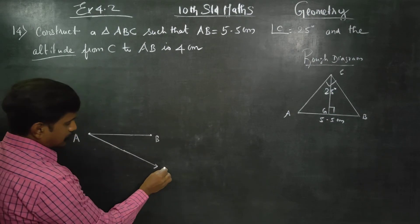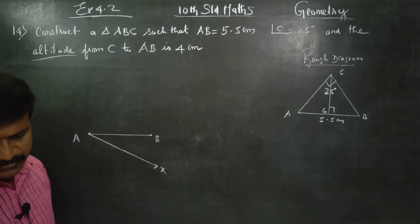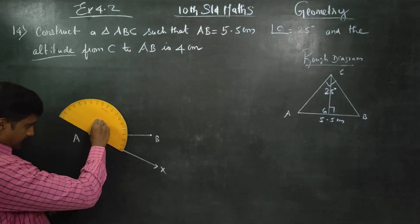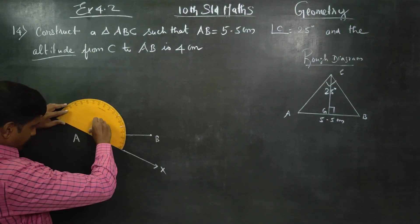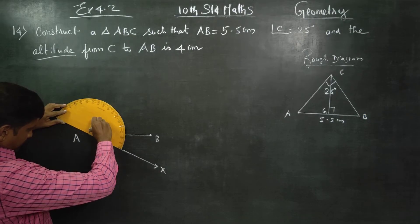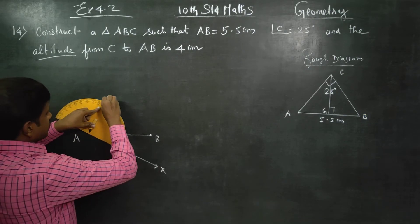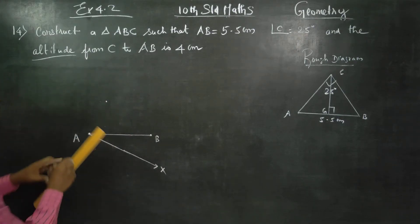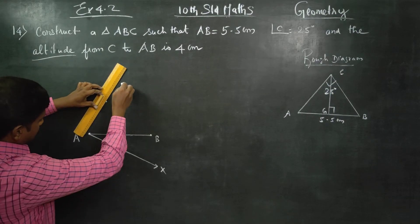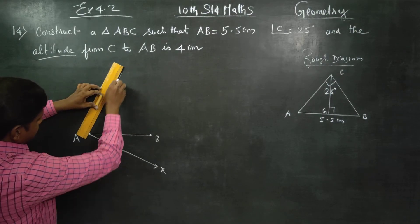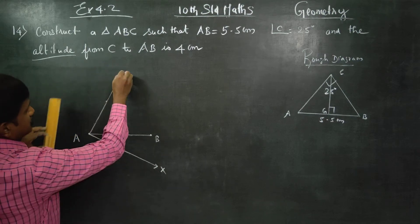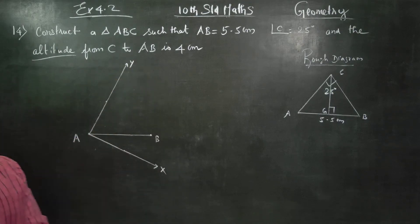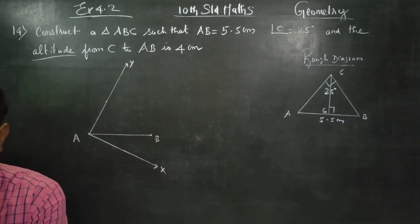This line is X. After this, use the protractor to measure 90 degrees and draw a ray at 90 degrees. This is the 90-degree perpendicular. This is my line X.